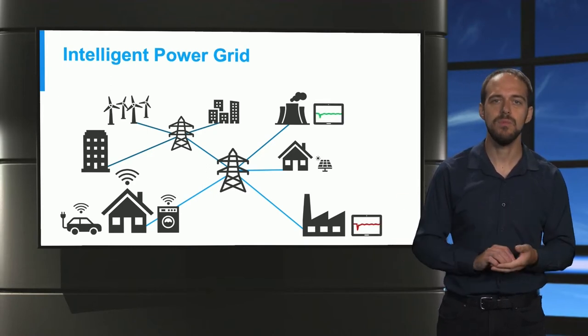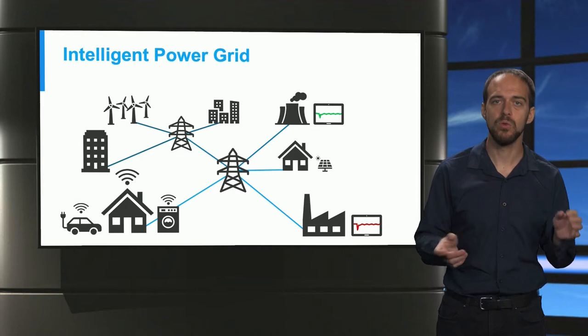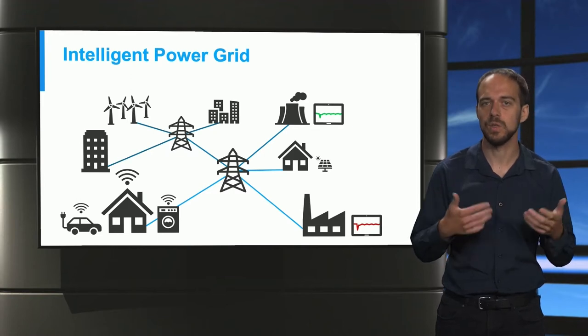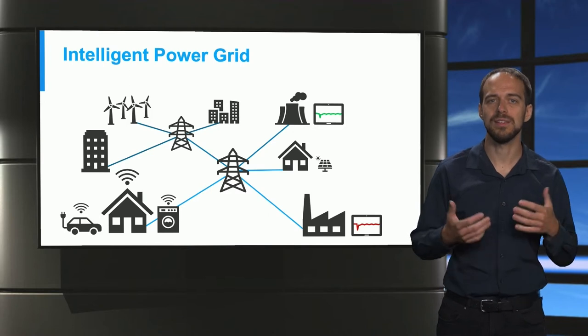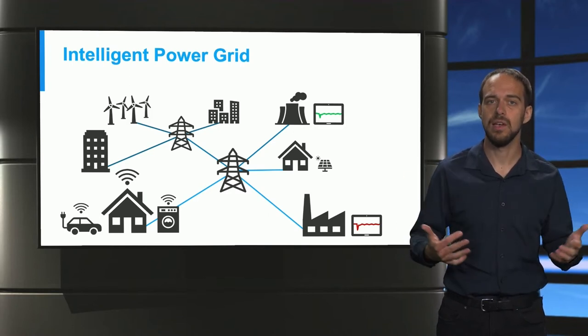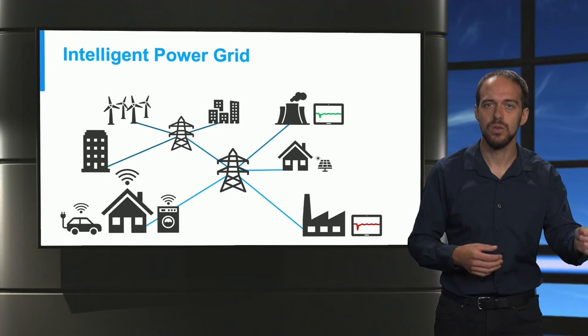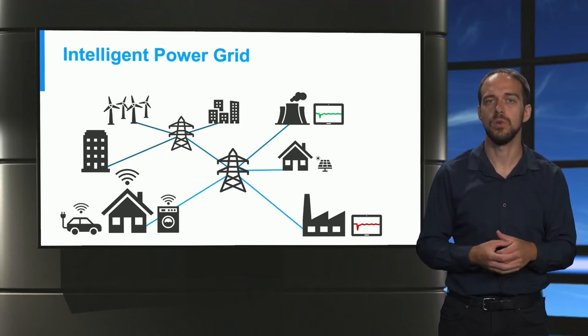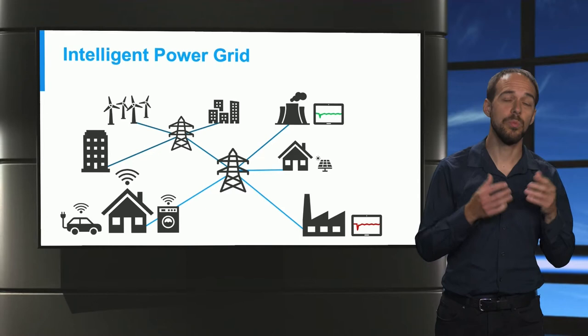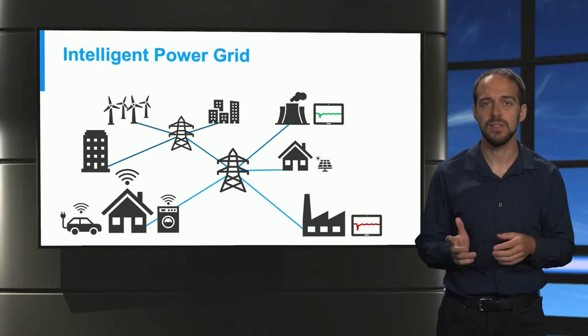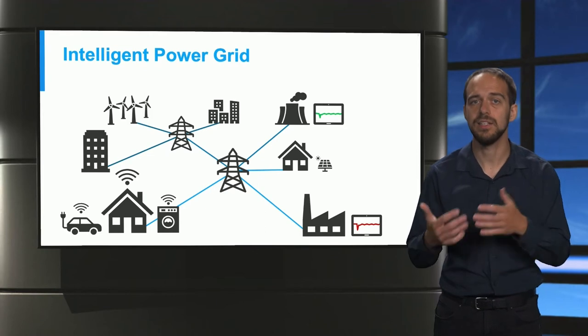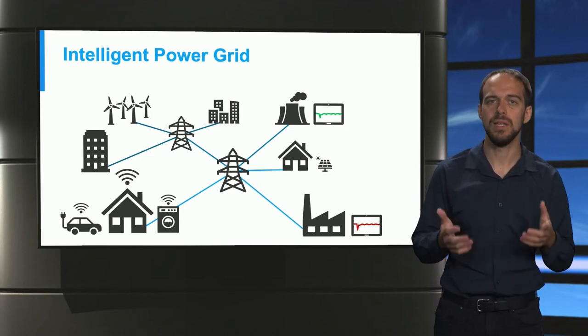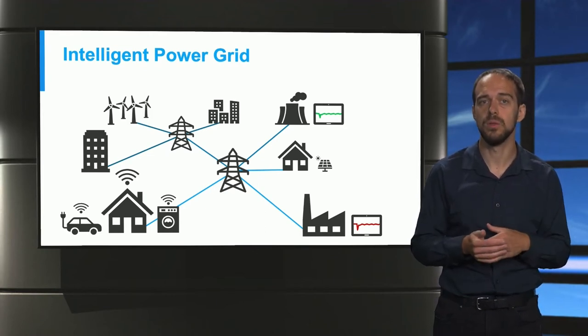At the same time, the grid becomes more observable through measurements because more data is collected locally and in the control room. This enables us to better understand machine learning opportunities either on the edge of the grid or centralized in the control room of the system operator. The opportunity for all participants is to understand this new type of data and apply adequate machine learning methods to balance and intelligently control the power system.